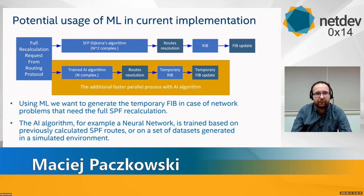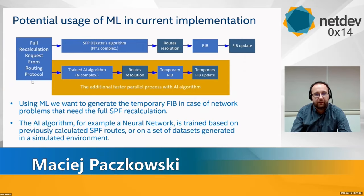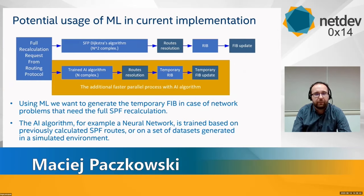We want to add parallel routes recalculation only in case of a full recalculation request, since this is the only place where the AI algorithm is faster than the original approach. Full recalculation request is performed every time a transit link fails. This results in two or more routers always forced to run expensive full SPF recalculation, with very negative impact on the routing of the overall network.